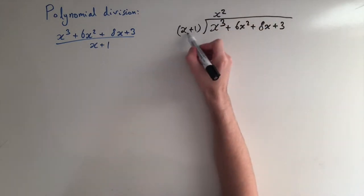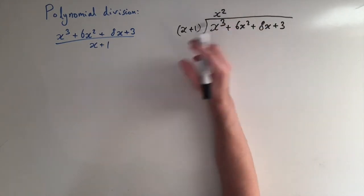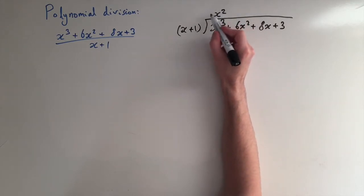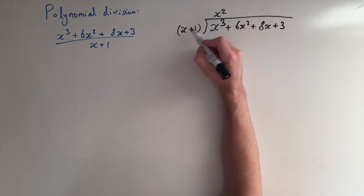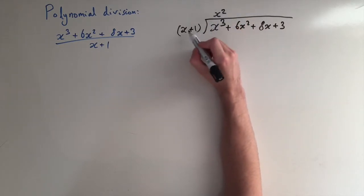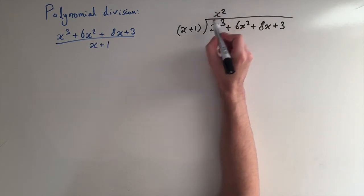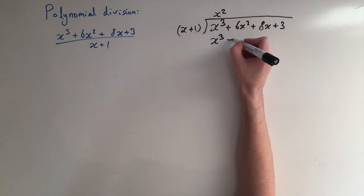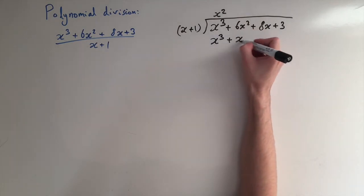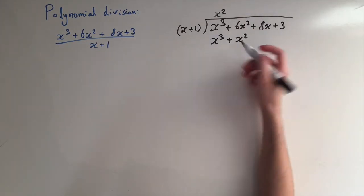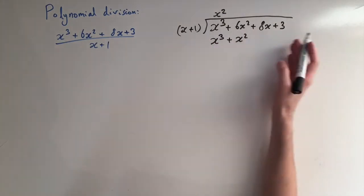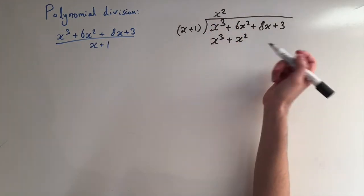Because we haven't included the plus 1, we need to balance the books. The way we do that is take our answer up here and multiply it by the thing we're dividing by. So we multiply x squared by x plus 1, which comes out to be x cubed plus x squared. It's good to line up the x cubed, x squared terms etc. to make it clearer what's happening.